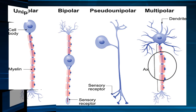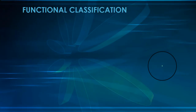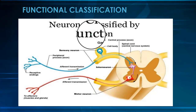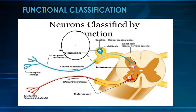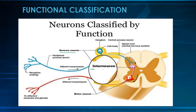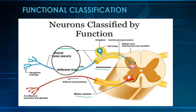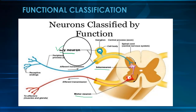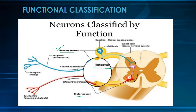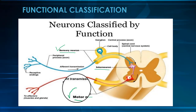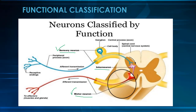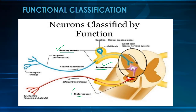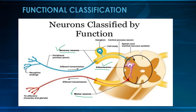For functional classification, neurons are divided into three broad types: sensory, intermediate, and motor. Sensory nerves have small axons and pseudo-unipolar structures. Motor nerves have large axons and many dendrites. Sensory and motor nerves are located within the peripheral nervous system, whereas intermediate nerves are found in the central nervous system.